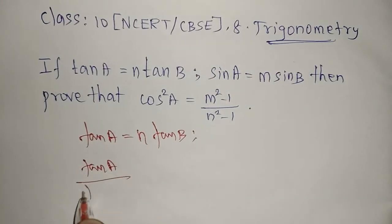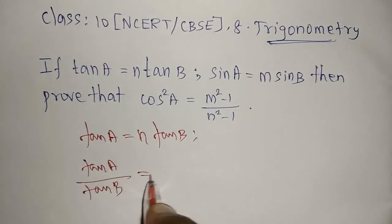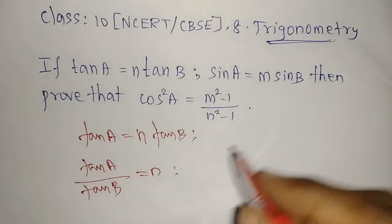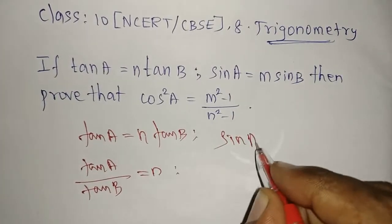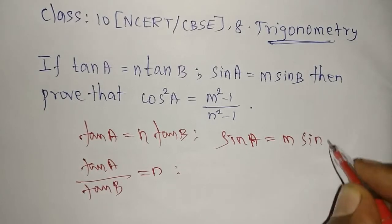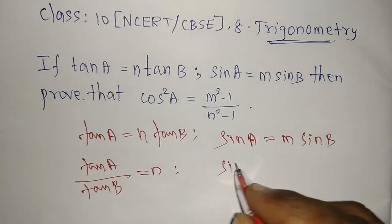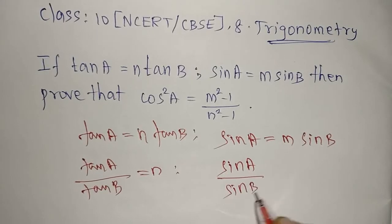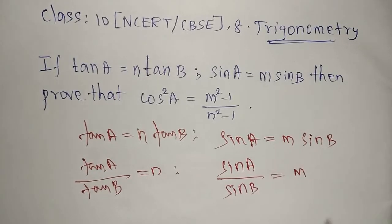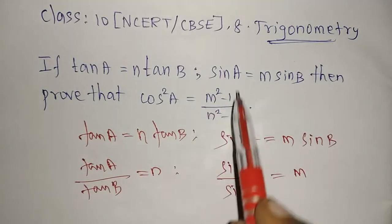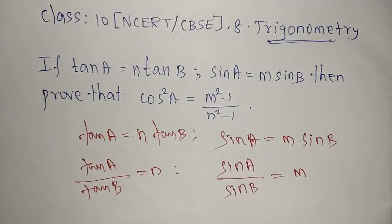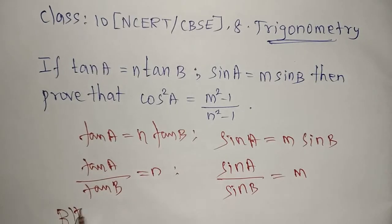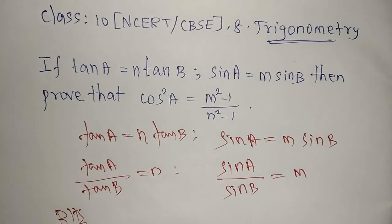tan A divided by tan B equals n — that is equation one. Likewise, sin A = m·sin B, so sin A divided by sin B equals m. Now we have the m value and n value. We substitute into the right-hand side, so RHS is (m²-1)/(n²-1).